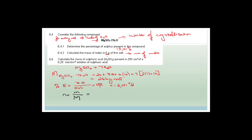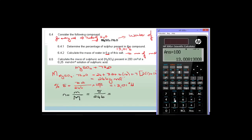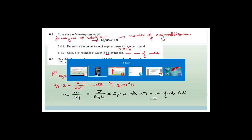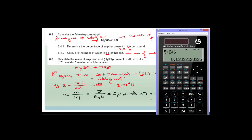The number of moles equals mass over molar mass. So to calculate the mass of water in 5 grams: n = 5 divided by 246, which gives 0.02 moles of this compound. But for every mole of the compound we've got 7 moles of water, so we multiply by 7 to get the number of moles of H2O. That gives us 0.14 moles of water.